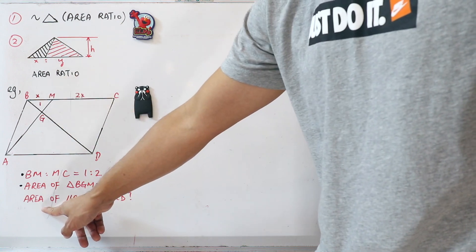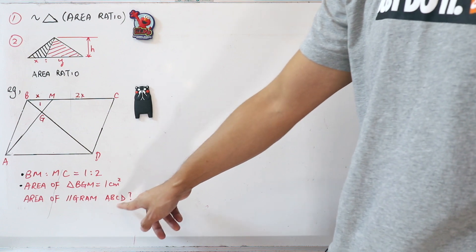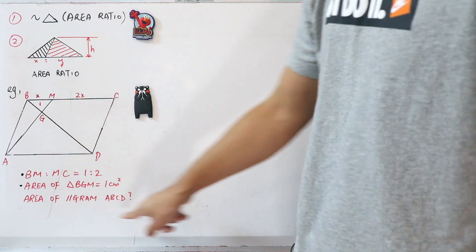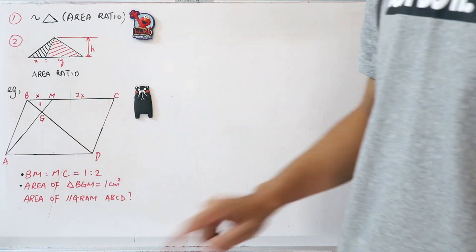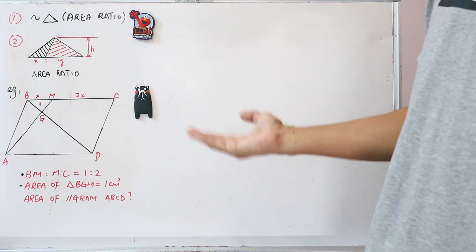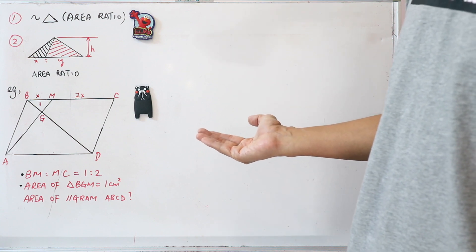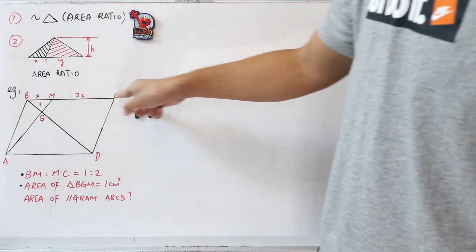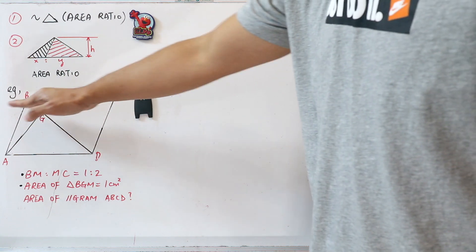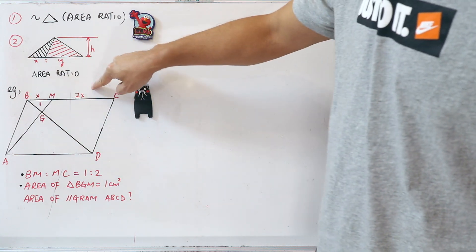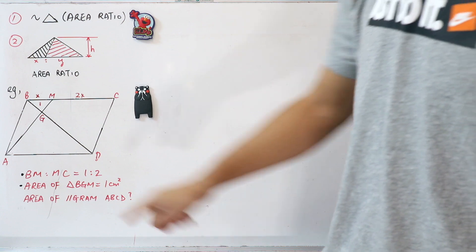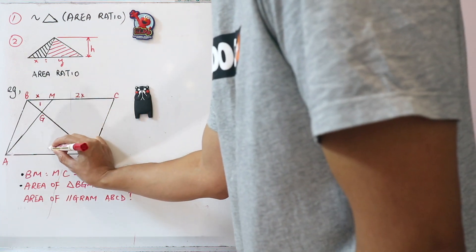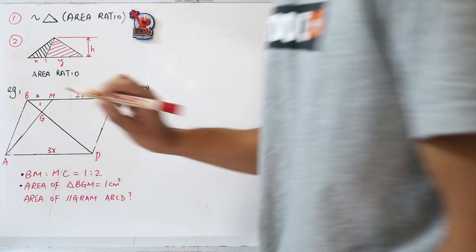This question asks you to find the area of parallelogram ABCD. Since ABCD is a parallelogram, one of its properties is that side AD and its opposite side BC have the same length. So if BC is x plus 2x, then AD will also be 3x. So I'll write 3x here.